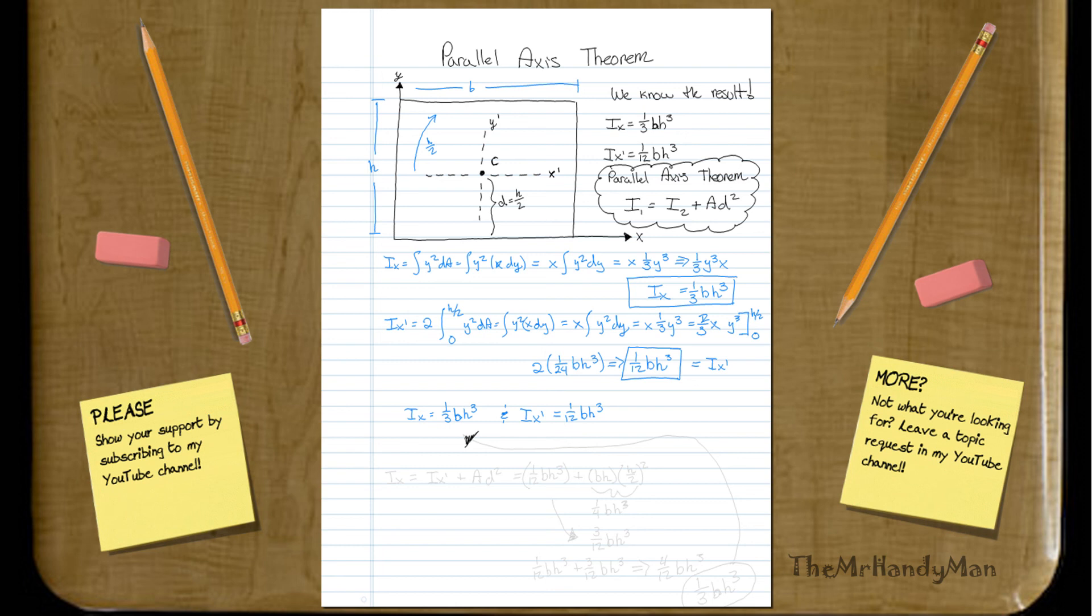Let's use the parallel axis theorem in the upper right. What you'll find is that you have ix equals ix prime plus area distance squared. Well, let's plug all that stuff in.